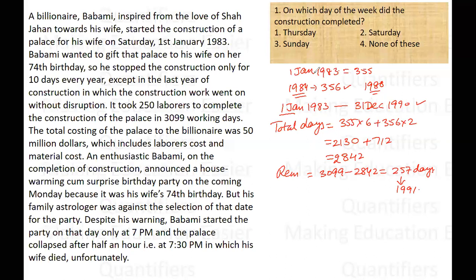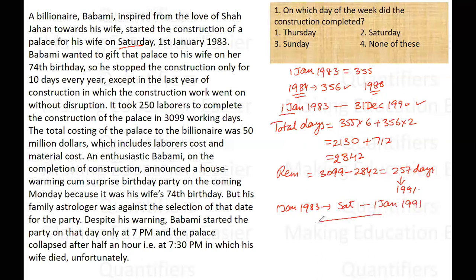The question is on which day the work was completed. We know that 1st January 1983 was Saturday. From 1st January 1983 to 1st January 1991, we have 8 years. Out of these 8 years, 2 years were leap years and the remaining 6 were non-leap years.